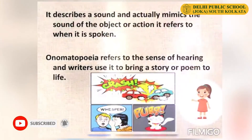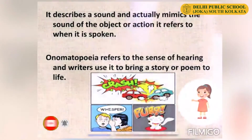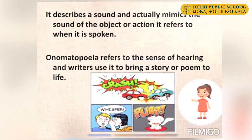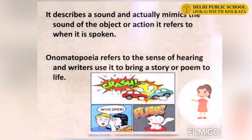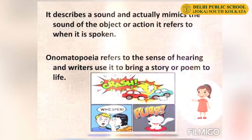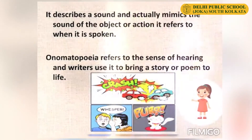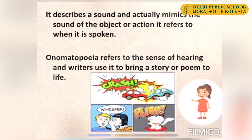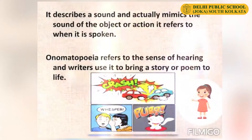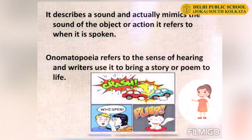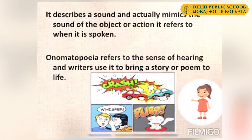Onomatopoeia — it describes a sound and actually mimics the sound of the object or action it refers to when it is spoken. Onomatopoeia refers to the sense of hearing and writers use it to bring a story or poem to life. Look at the examples given below: crash, whisper, purr.